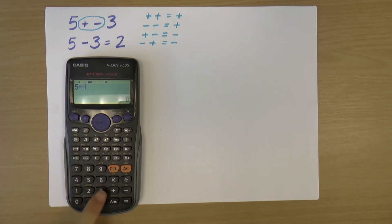So I've got 5 plus negative 3. So that is the symbol for a negative number, a minus number. So 5 plus minus 3, and again that gives me 2. So it's the same deal.